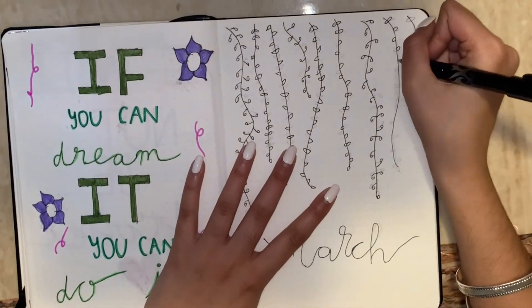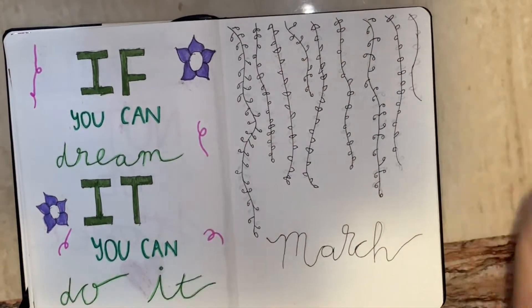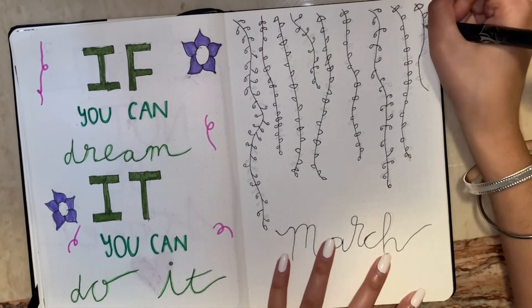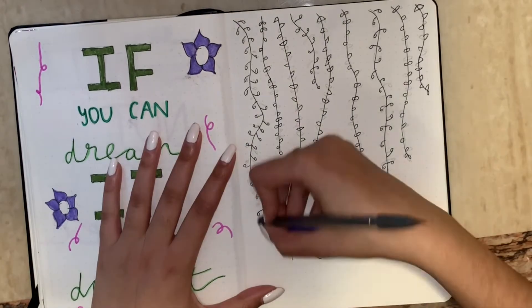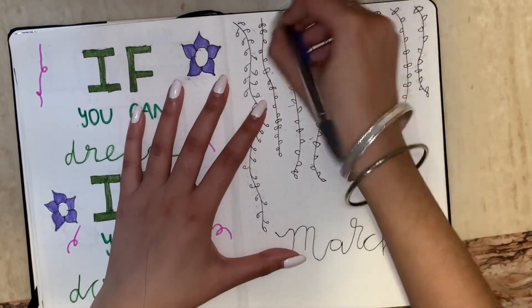So after I finish the lines, I'm gonna go in with the green and fill everything in. But first we gotta erase the lines from the pencil.